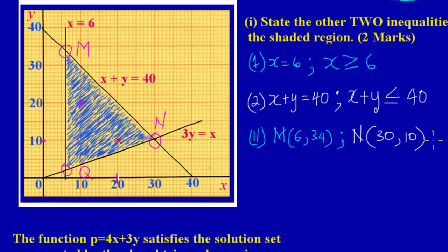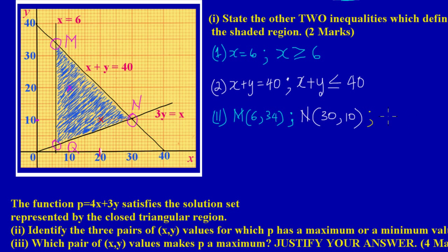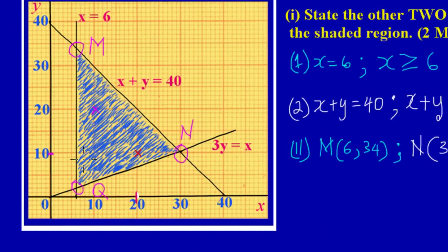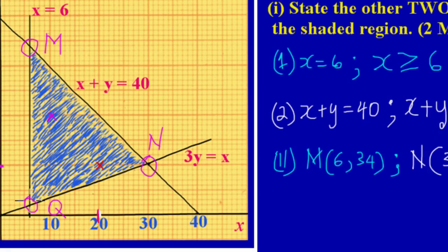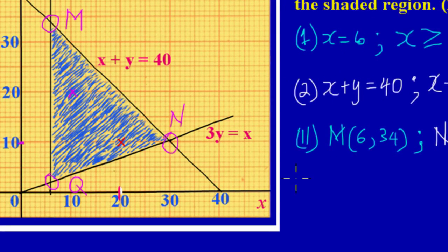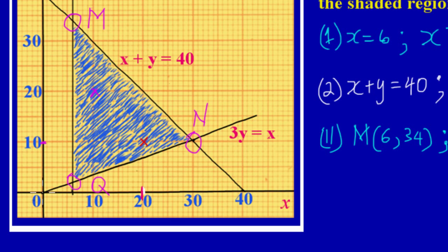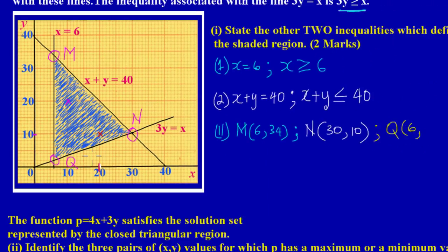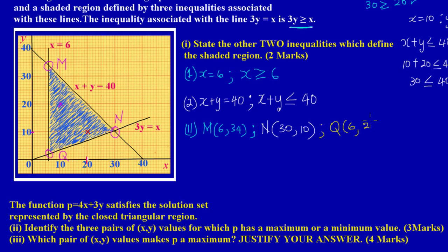Now for the final vertex Q. Since Q lies on the line x = 6, the x value is 6. For the y value, each small graduation increases by 2, so counting: 1, 2 — the point passes through y = 2 on the y axis. So the coordinates for Q are x = 6 and y = 2. We have now identified all three vertices.